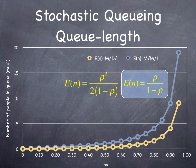You can look at how the number of people in the queue increase for an M/M/1 process. As you approach a rho of 1, the number of vehicles or people in the queue increases nonlinearly. This figure also shows the equation that you would use in the case of an M/D/1 process. The M/M/1 has a longer queue than the M/D/1 process.